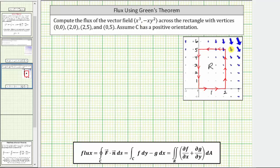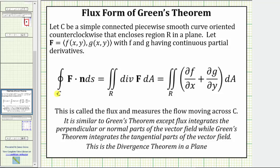Both the vector field and the curve satisfy Green's theorem, which means we can use Green's theorem to determine the flux. The flux is equal to the line integral along the curve C of the vector field F dotted with the unit normal vector N, differential S, which is equal to the double integral over the region R of the divergence of the vector field F, differential A.